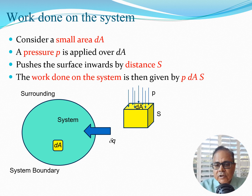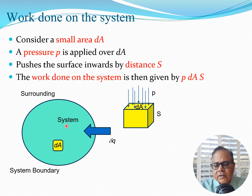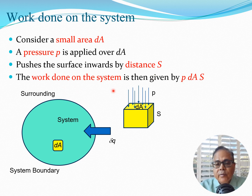Now we simplify each term. Consider a small piece, call it dA — an area — on which we apply a pressure. Because air is compressible, there is some motion inside; the pressure applied on dA pushes this surface inward by a distance s. From physics, work done on the system equals force times distance. The force is p times dA, and s is the distance moved, so work done on the system is p·dA·s.